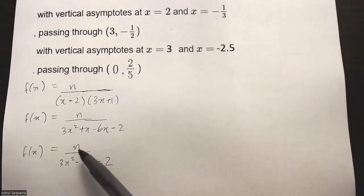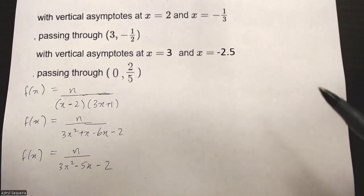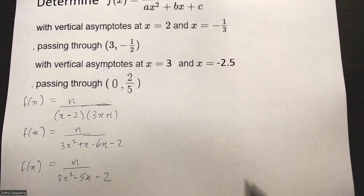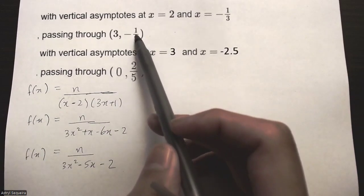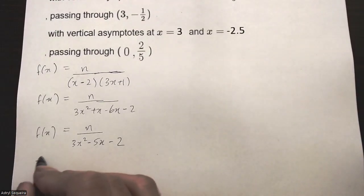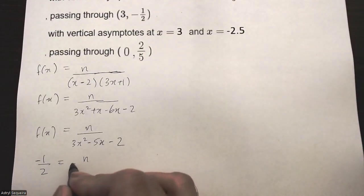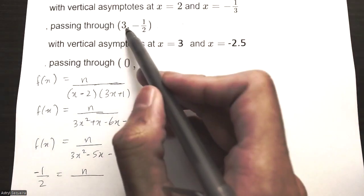Now we just have to figure out the value of n, and in order to do that all we have to do is substitute in the point they give us. So I'm going to replace my y with negative 1/2 and I will replace my x with 3.